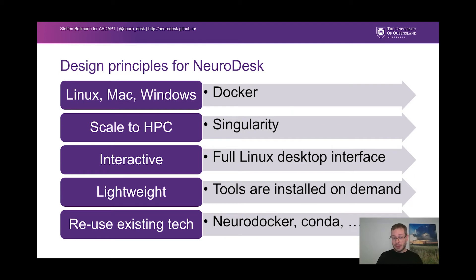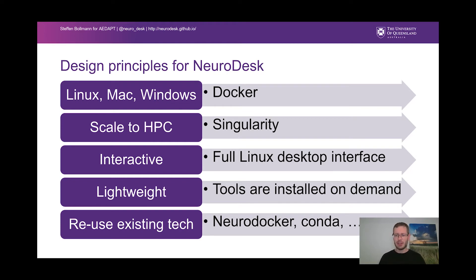So when we looked at this, we said these are our design principles: we want to run on Linux, Mac, and Windows — for this, the best technology right now is Docker. We want to run on HPCs — for this, we currently need Singularity. It should be interactive, a full Linux desktop interface, and it should not restrict what researchers can do. It should be lightweight; tools should be installed on demand and not be a really big 150 gigabyte container. It should be small components that can be quickly exchanged. And we should use existing technology wherever we can — we are only a small team.